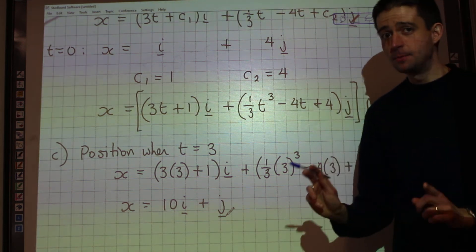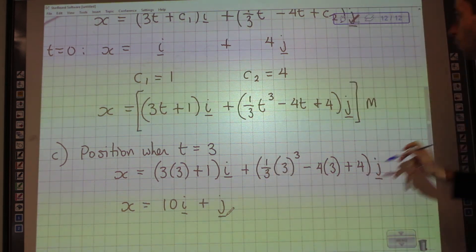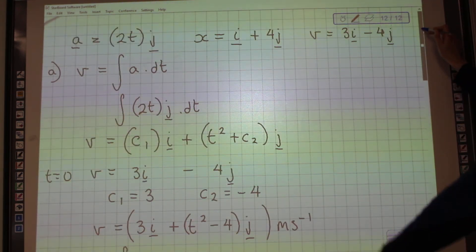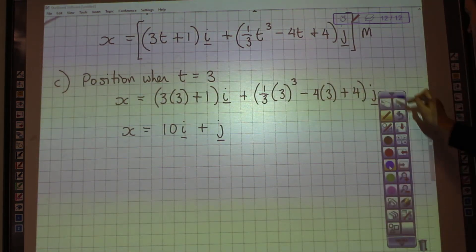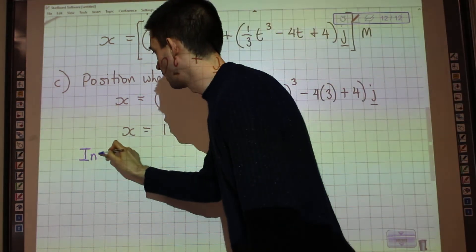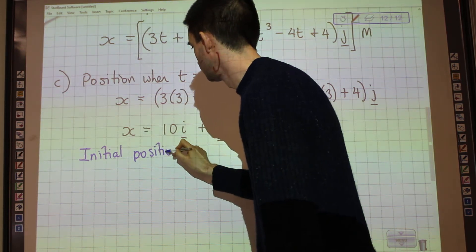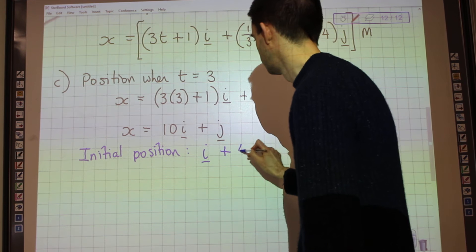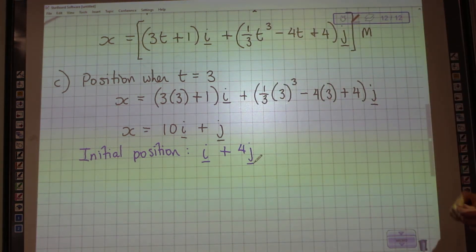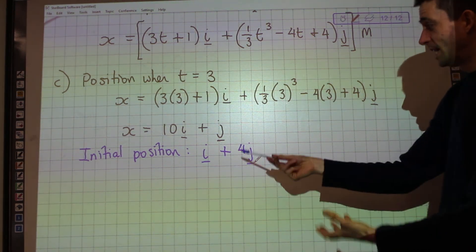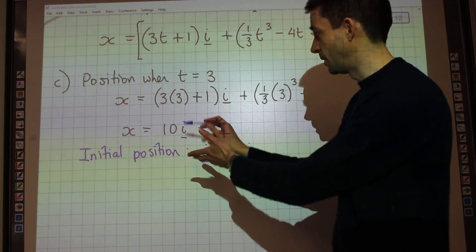Now, that is not the same as displacement. That is where it is, not how far it's travelled. What we have to remember is that our initial position was i plus 4j. So, initially, our initial position was i plus 4j.